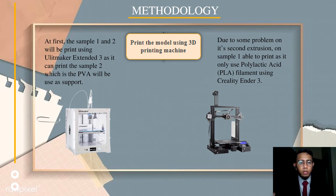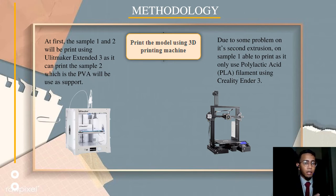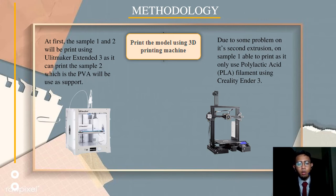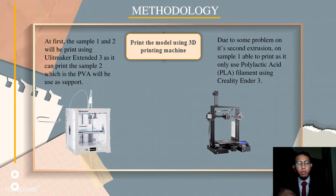For the process of printing the model using a 3D printing machine, as I mentioned before, I planned to use two types of samples — Sample 1 using only PLA filament, and Sample 2 using PLA and PVA where PVA serves as support. Initially, both samples were to be printed on the Ultimaker Extended 3, as it can print with dual extrusion. However, there was a problem with the second extruder, so I decided to use the Creality Ender 3. As a result, only Sample 1, using PLA filament, was able to be printed.